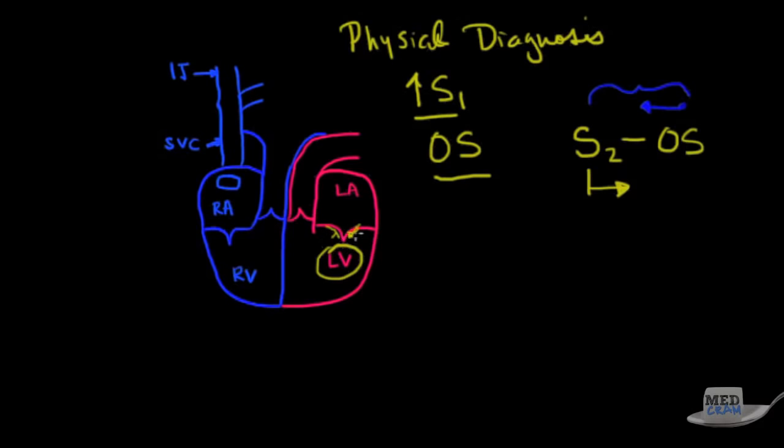that means it's opening up early in diastole. And that could only mean, if it's opening up earlier, that there must be a bigger gradient across this valve. The bigger the gradient, the worse the mitral stenosis.